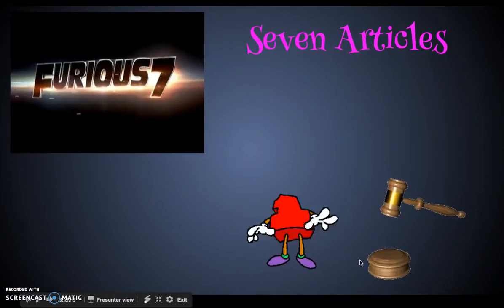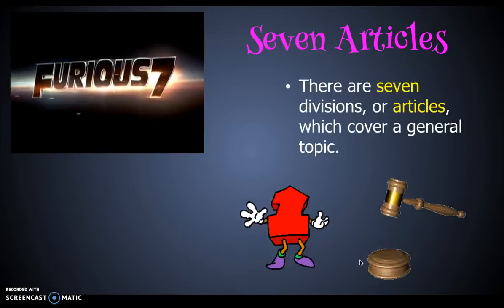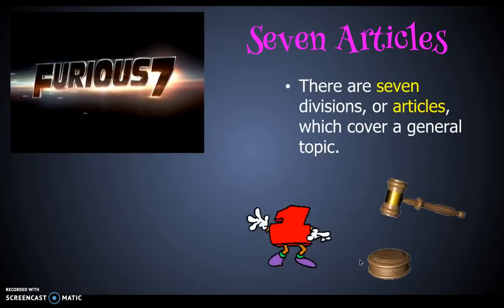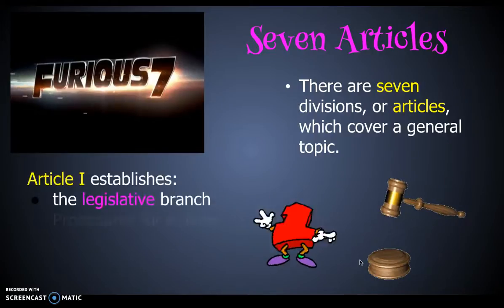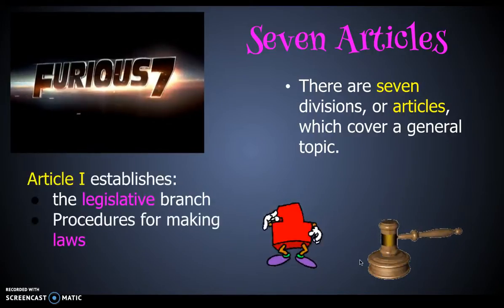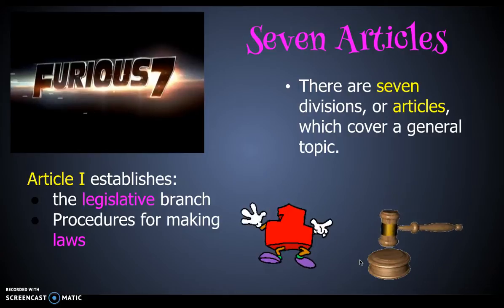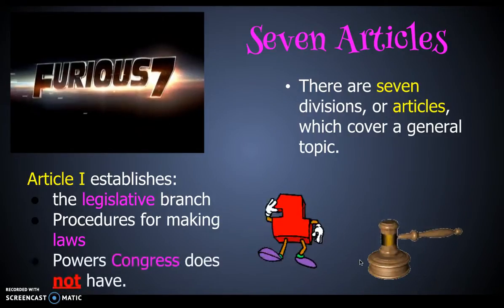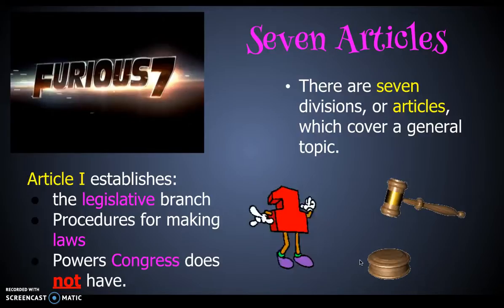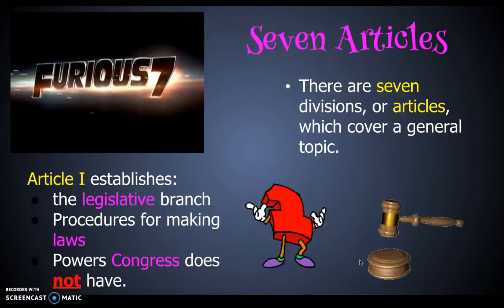Beyond the preamble are seven articles, and they each cover their own particular topic. Article 1 is all about the legislative branch and defines what they're supposed to be doing as far as lawmaking and other requirements, but also the powers that Congress does not have. Unlike the Articles of Confederation, we now have three branches.